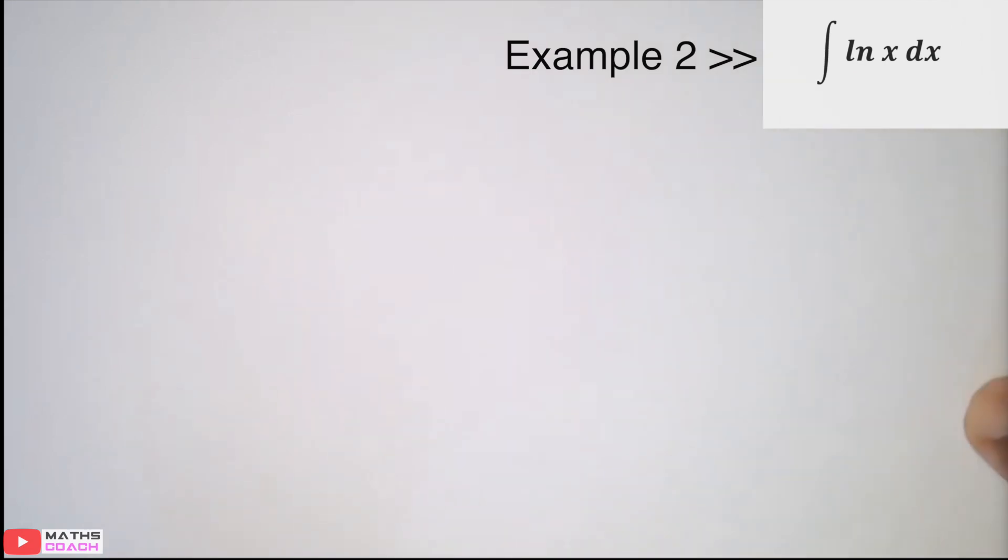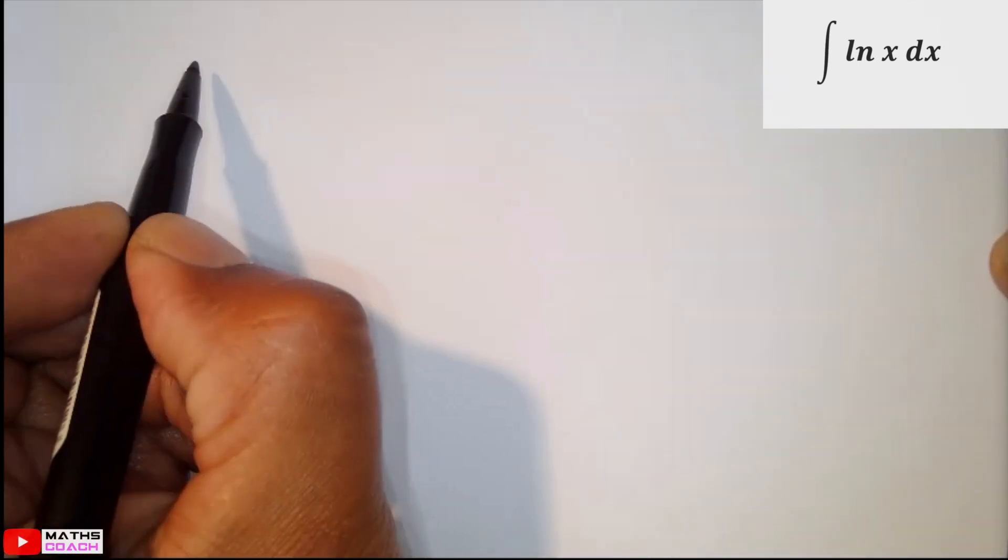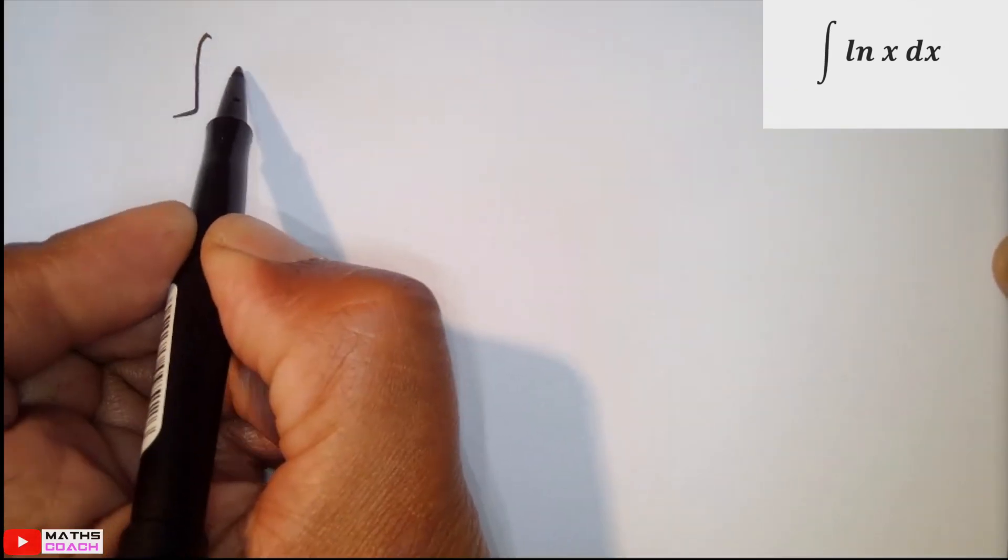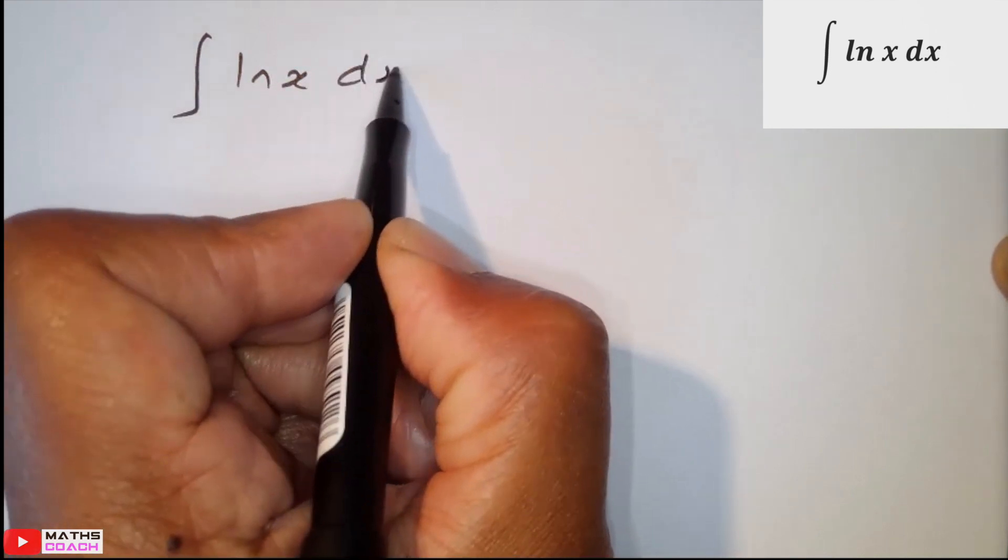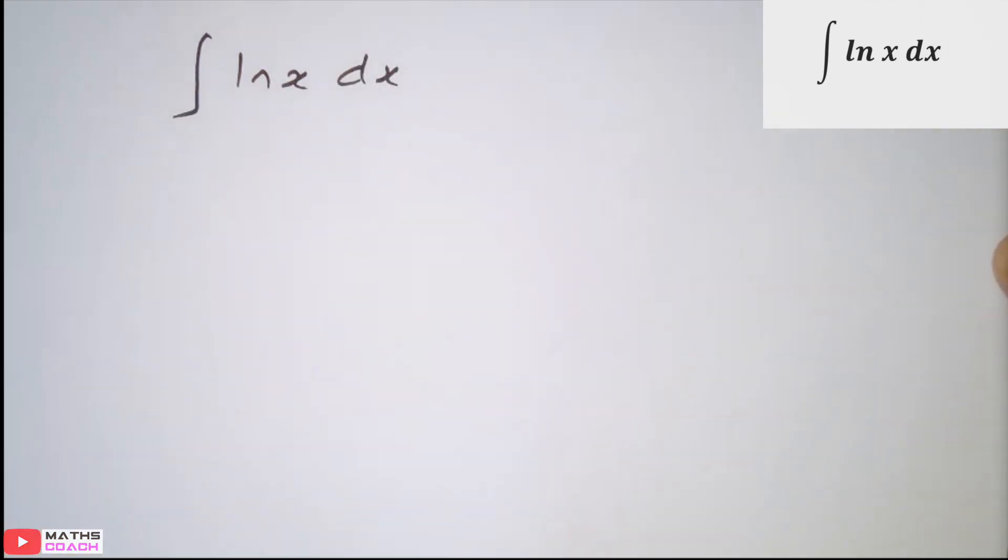Now, this is integration by parts. At a glance, I can only see one expression here, ln x. It's an unusual one because most people know the differentiation of ln x being 1 over x. But when asked the question, what's the integration of ln x, we need to do it through parts.